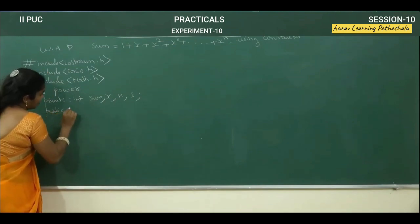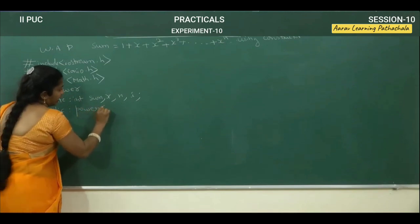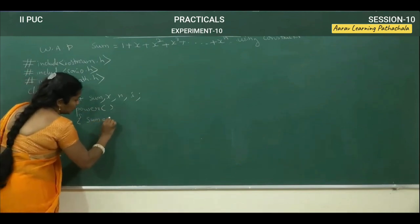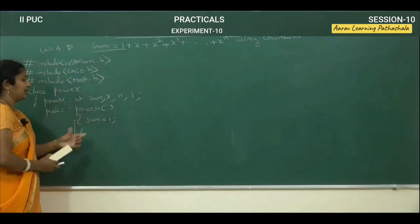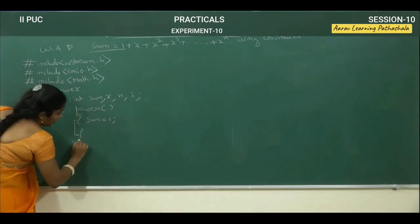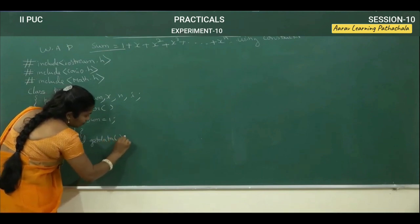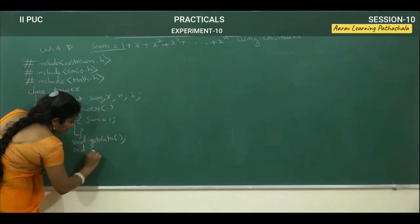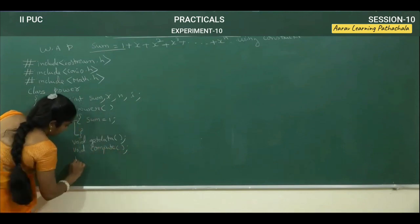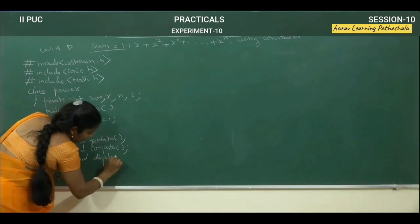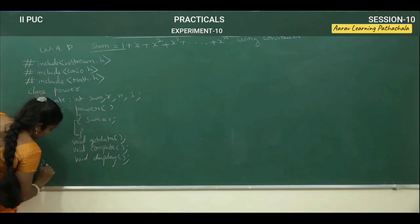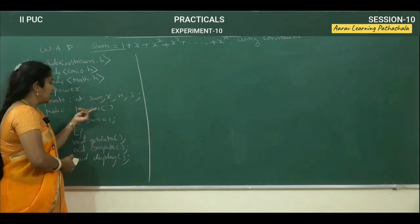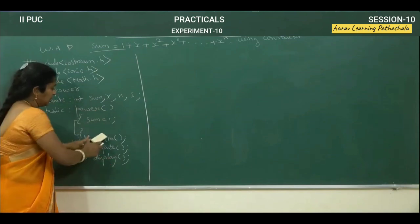Then in the public section, we are declaring the functions. The first function is the default constructor function — class name as well as function name are the same: power. Here I am initializing sum equals 1, then close this function. Next, I am going to take void getData function, void compute function, and void display function. In total we have 4 functions: power (constructor), getData, compute, and display. The last three are regular functions, whereas power is the constructor function.